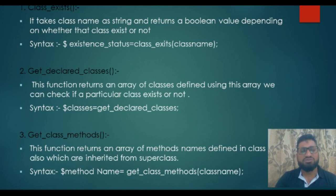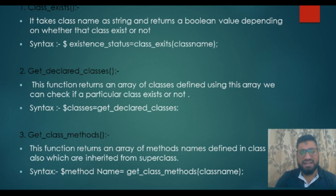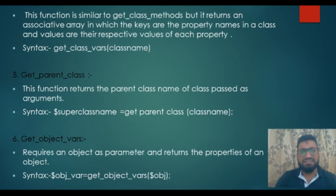The next function is get_class_methods. This function returns an array of method names defined in a class, including those inherited from a superclass. The syntax is: $method_names = get_class_methods('class_name').